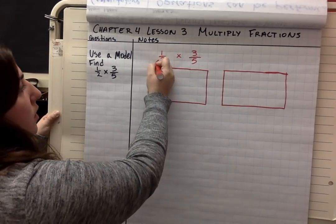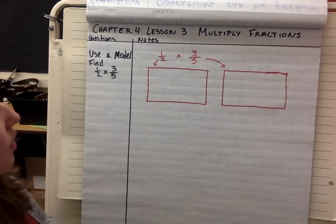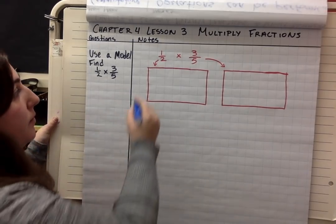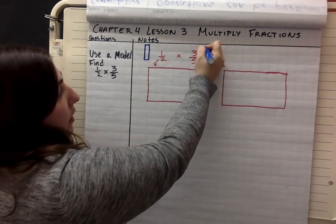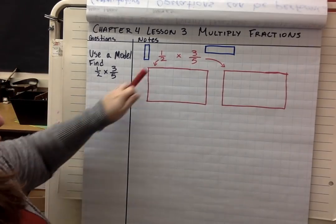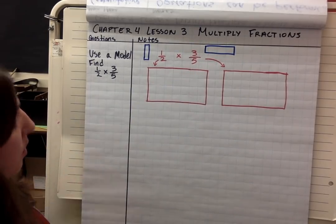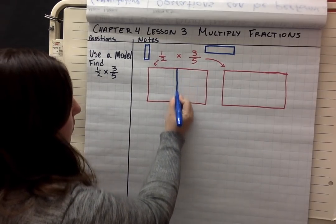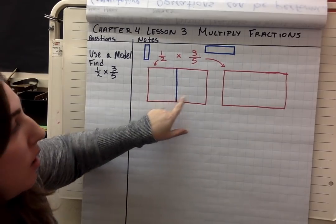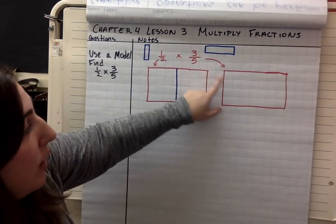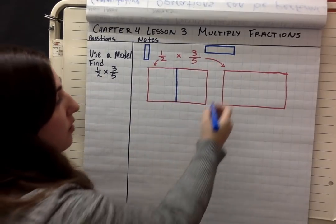Here I have 2 brownie pans. One is going to show the 1 half and one is going to show the 3 fifths. I have to keep something in mind — one of the pans is only going to have horizontal bars and the other is only going to have vertical bars. For 1 half I'm only going to draw horizontal bars, and for 3 fifths I'm only going to draw vertical bars. I divided it into 2 because my denominator is 2, so I need 2 sections. For 3 fifths, my denominator is 5, so I need 5 different sections.